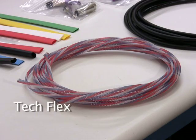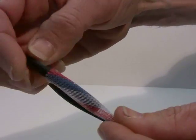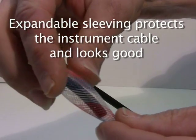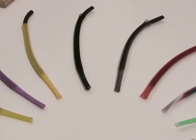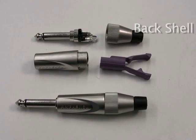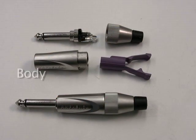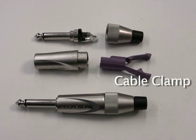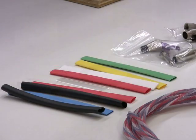The second item we have is the TexFlex expandable sleeving. It goes over the cabling. It's 26 feet of this, will go over 20 feet of the instrument cable, and Brian picked the Patriot coloring. The next item is our Amphenol connectors. There's four pieces: a back shell, the body, the tip, and the cable clamp. The last item is the heat shrink in various colors. All these are available at TubeDepot.com.